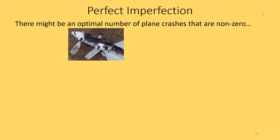For example, an economist might make a statement such as: there might be an optimal number of plane crashes that are non-zero. That's a tough thing to say to somebody, particularly someone who has lost a family member in a plane crash, but let's think about why an economist might say that. Right now, the chances of dying in a plane crash are pretty low — there are all kinds of safety measures taken by airlines, with highly trained pilots and fuel gauges and backup fuel gauges.